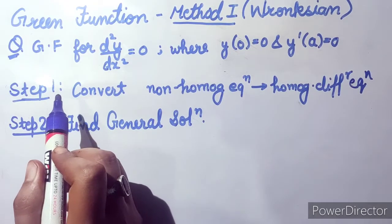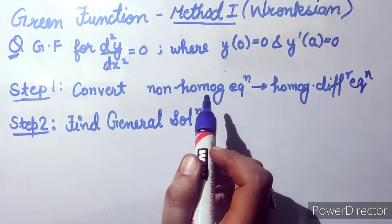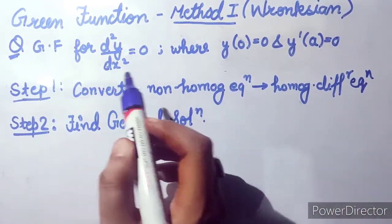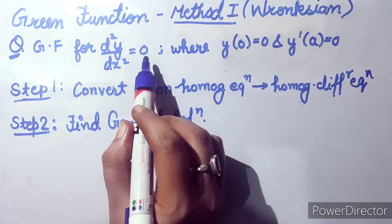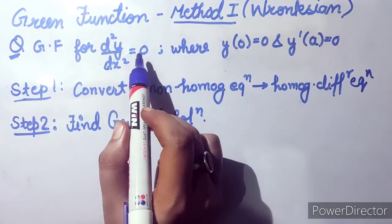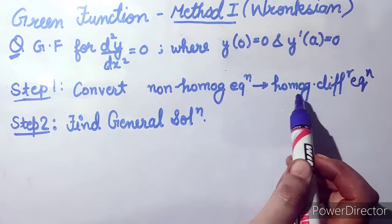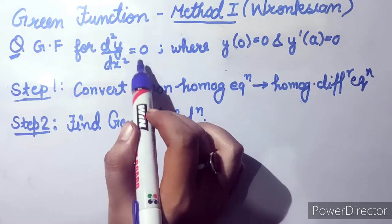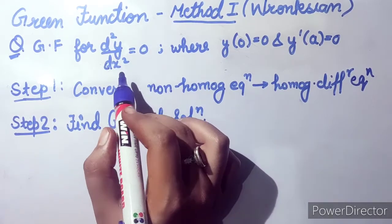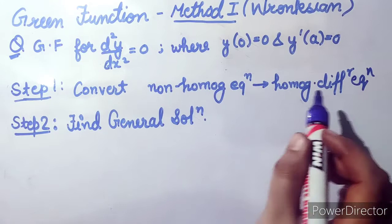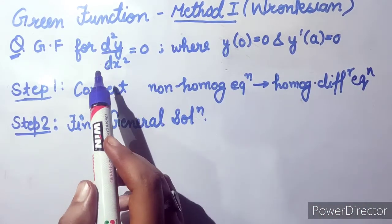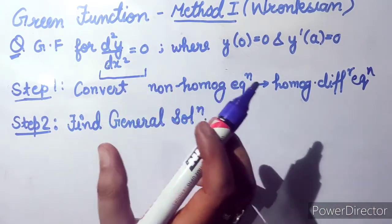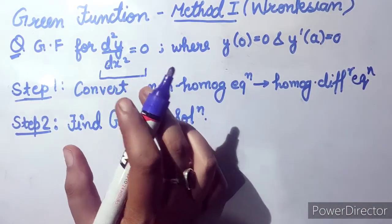Step number one is to convert the non-homogeneous differential equation into a homogeneous differential equation. That means if you have any term on the right-hand side, you convert it to zero to get the homogeneous form. In our question, the differential equation is already homogeneous, so we don't need to do anything and will keep it as it is.